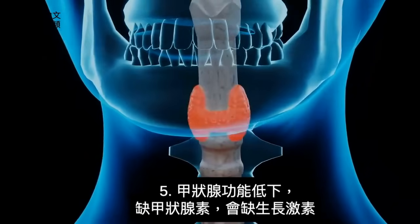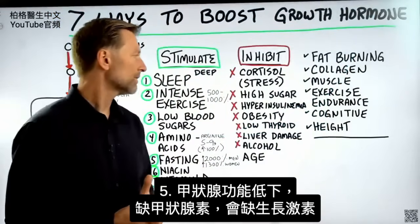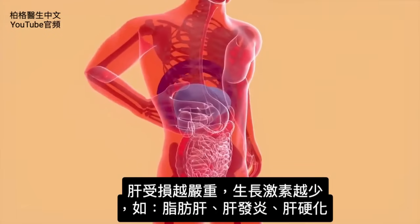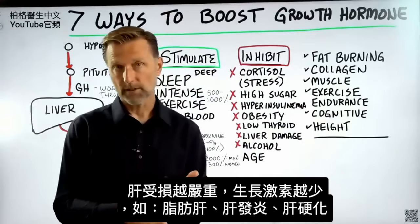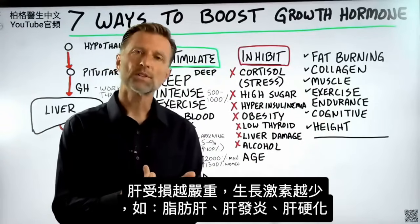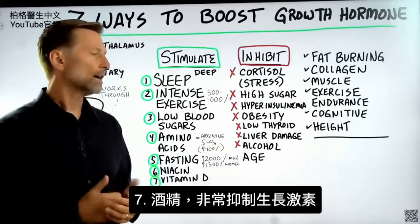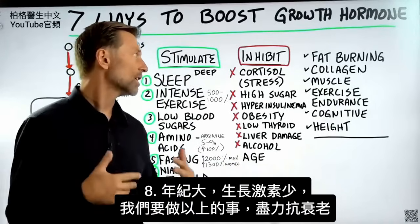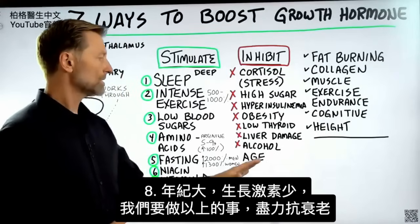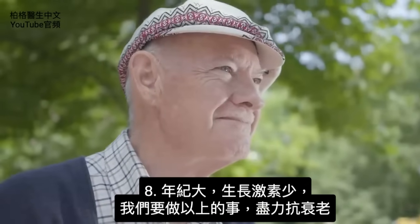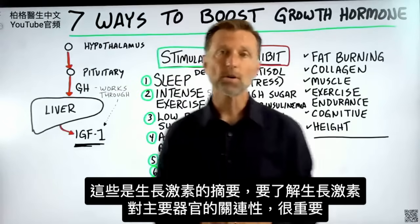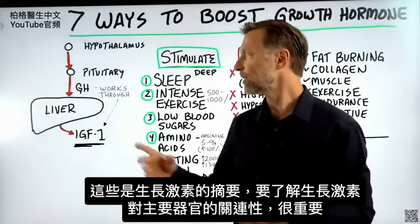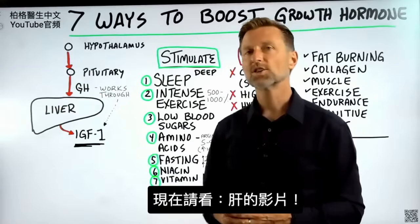Low thyroid is another inhibitor: if your thyroid is not working correctly, you won't be able to produce enough growth hormone. Since growth hormone works through the liver, we need a healthy liver — the more damage you have, whether a fatty liver, inflamed liver, or cirrhosis, the less growth hormone you'll have. Alcohol has a pretty potent suppressive effect on growth hormone. And of course, age — as you age, you have less growth hormone, so we're doing all these things to compensate for aging. There you have it: growth hormone in a nutshell. It would be smart to get more information about the liver, which is the main organ growth hormone connects to.